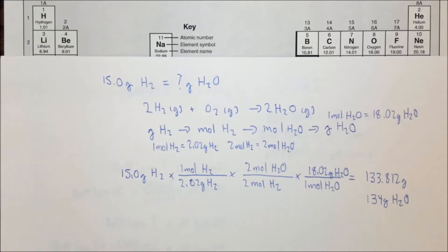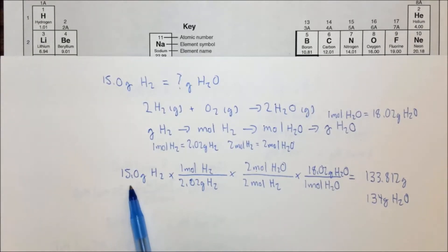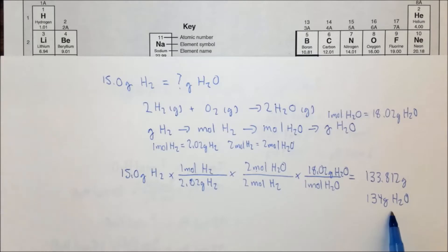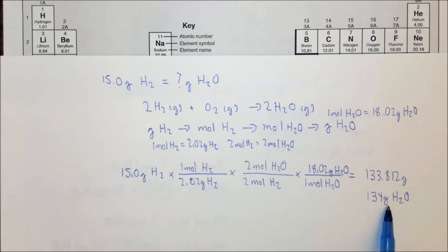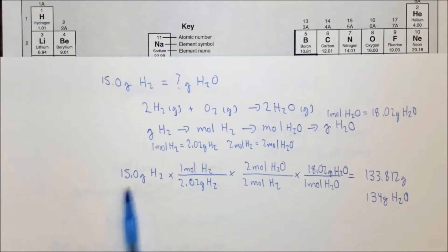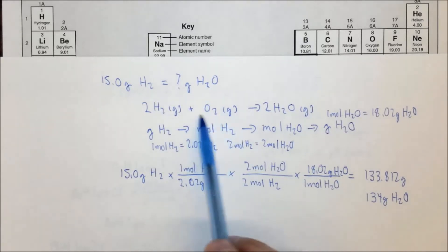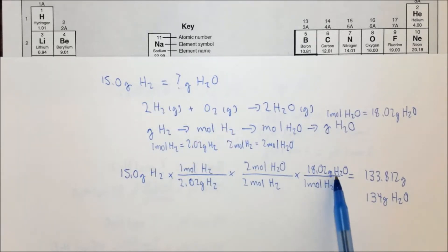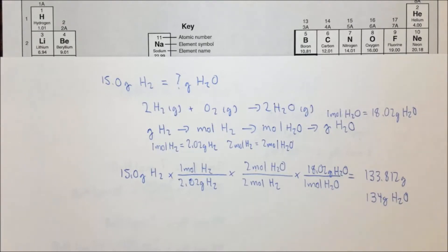This is extremely useful. If we react 15 grams of hydrogen, we make 134 grams of water. This allows us to predict how much water we will make. Where did all that extra mass come from? All of that excess mass came from oxygen, because this involves adding two hydrogens and an oxygen, and oxygen is much more massive than hydrogen.